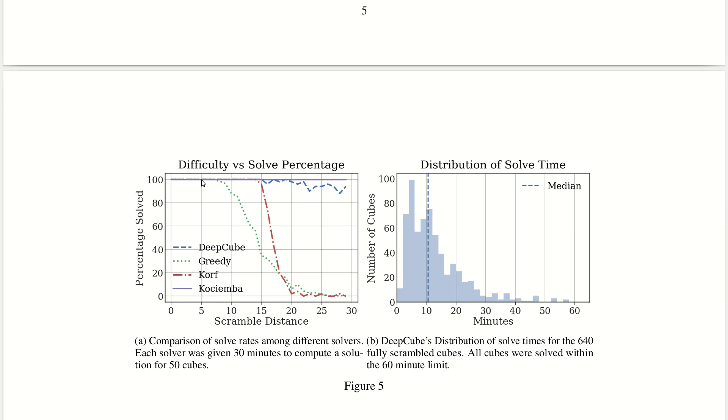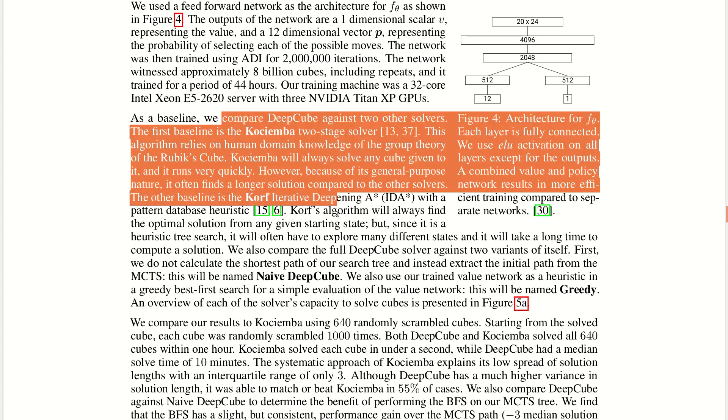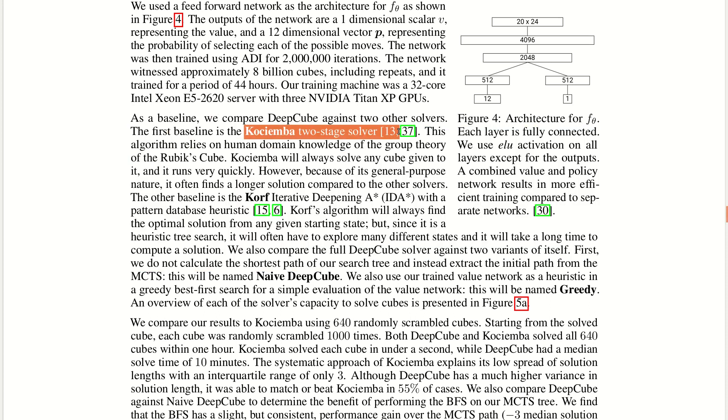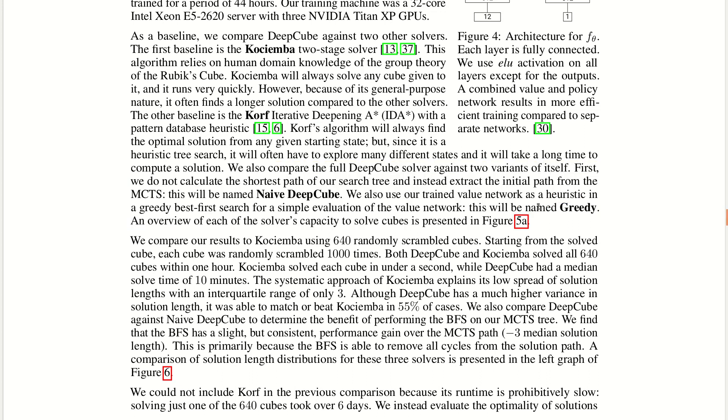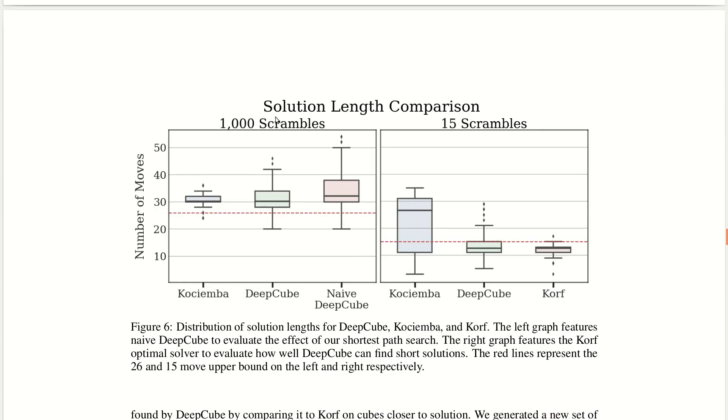The key results that they have shown is they have used this GPU with 32 cores. For benchmarking their result they have used the normal Cube Explorer Kociemba two-stage solver, they've used this Korf IDA which is used for big cube solving 4x4, 5x5 solving, they've used the normal naive DeepCube which is using a pure greedy algorithm in the value network. And then they got this scramble-solve comparison and this DeepCube performed quite well when there's less number of scrambles and it performed quite average when the number of scrambles are more because the brute force algorithms they are quite good.